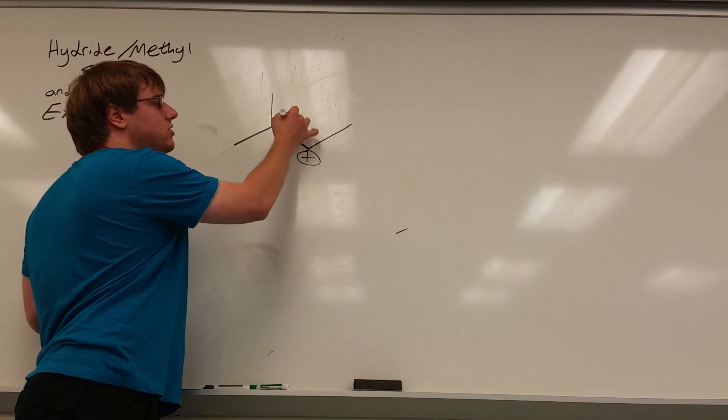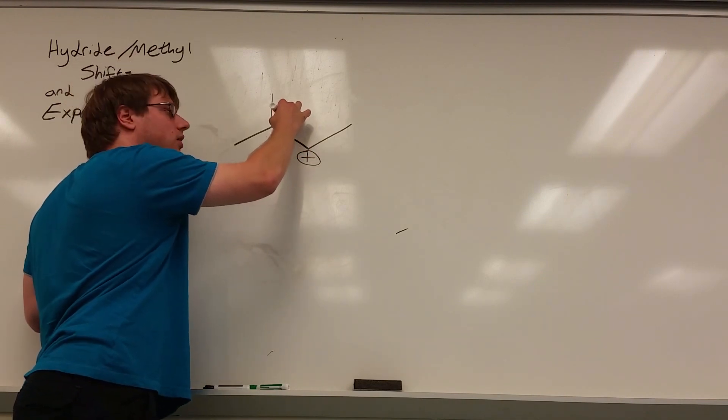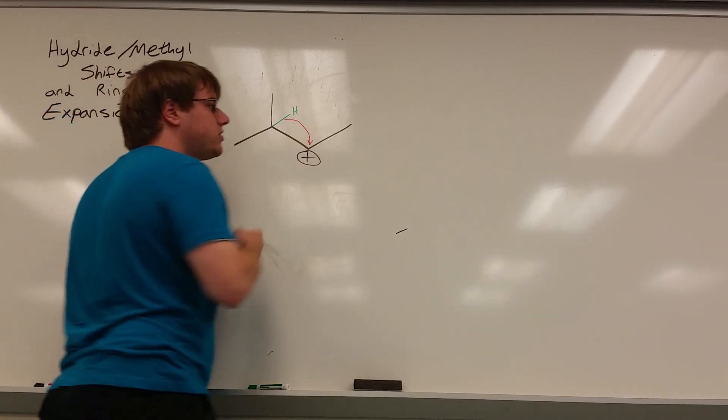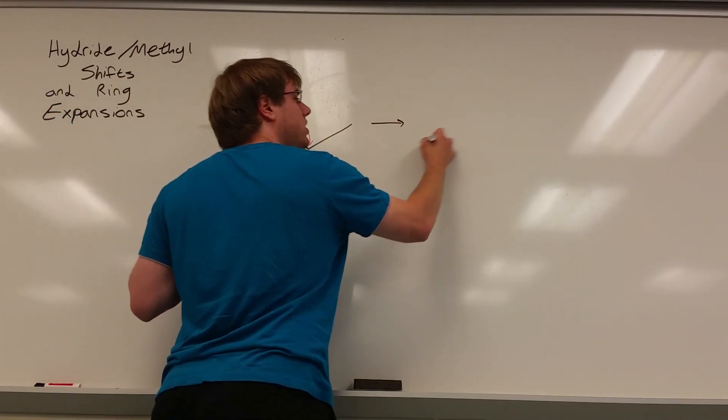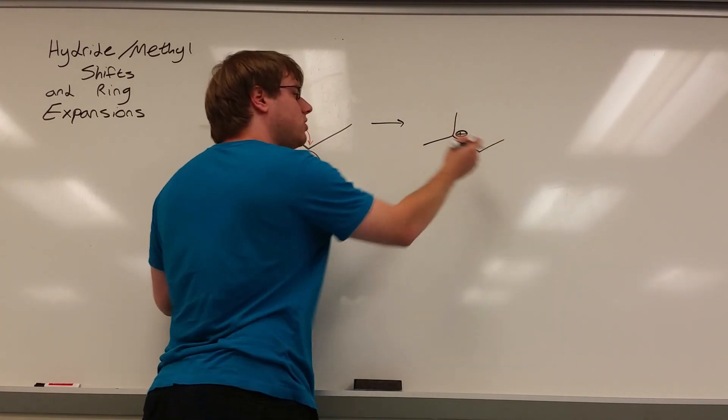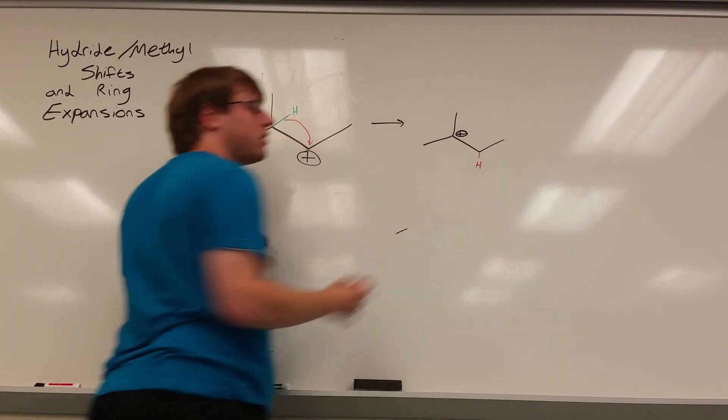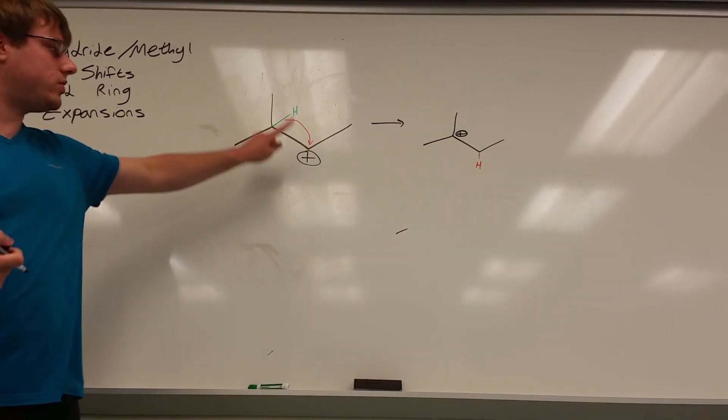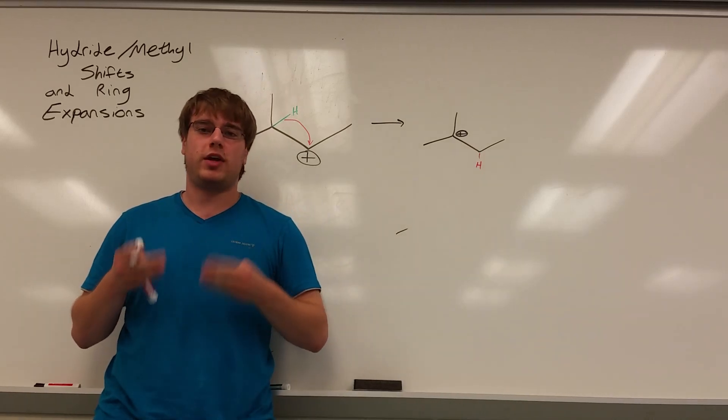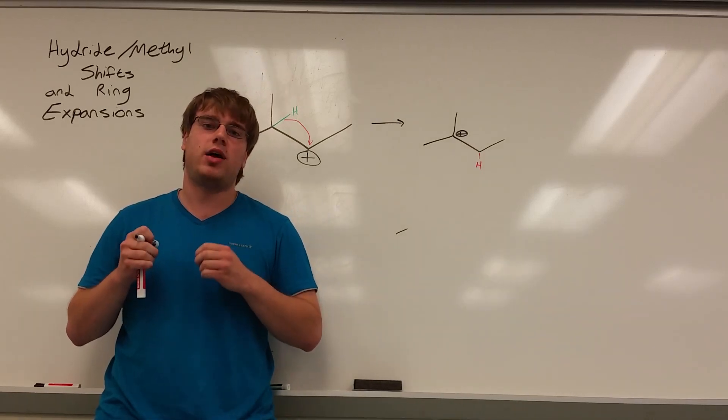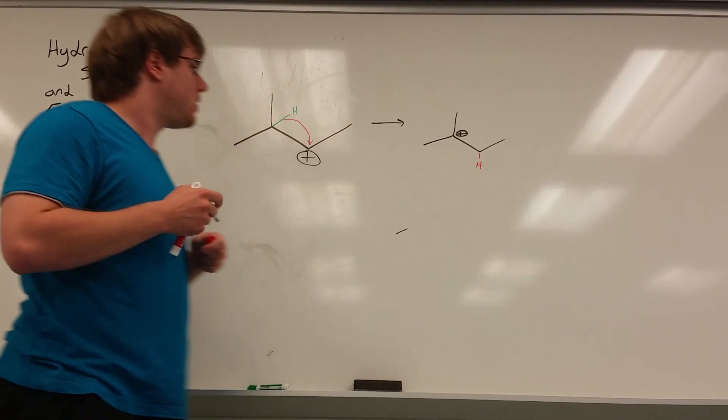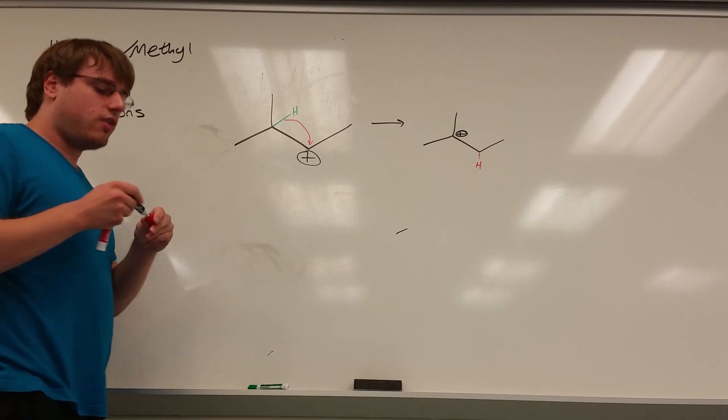The way a hydride shift works is the hydrogen and the carbocation effectively switch positions. The way you draw that mechanistically is you take your arrow and start it from the carbon-hydrogen bond and draw it to the carbon that's positive. The net result is the carbocation will now be on the tertiary position and that hydrogen will be on the secondary position. You've gone from something that was less stable to something that's more stable. Carbocations are super reactive and will always look to stabilize themselves, even if it's by a tiny amount.